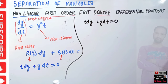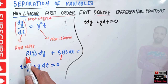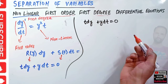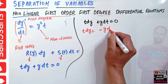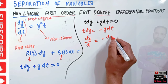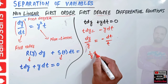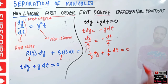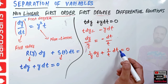Let us say we have the equation t·dy + y·dt = 0. We will use the separation of variables method. Since t·dy and y·dt are mixed, R is not a function of y alone and S is not a function of t alone, so we rearrange. Transposing: t·dy = −y·dt, then dy/y = −dt/t, which gives us (1/y)dy + (1/t)dt = 0.